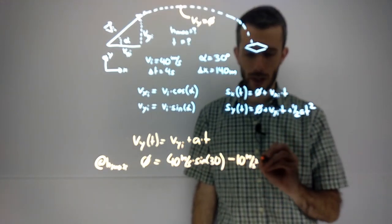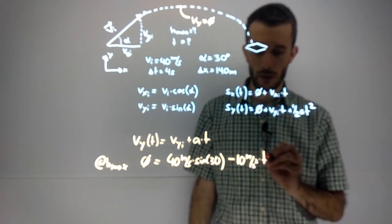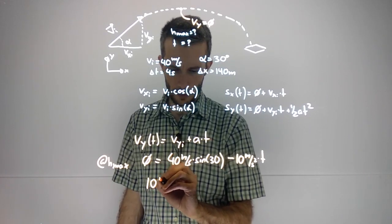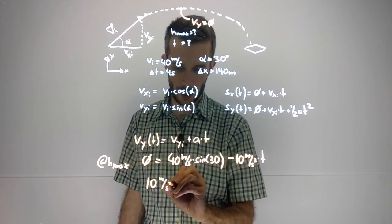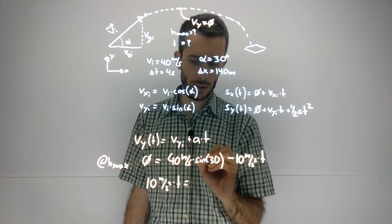And then times the time—that is the unknown variable. So if I rearrange this, I get 10 meters per second squared times time equals 40 times sine 30, that's 20 meters per second.